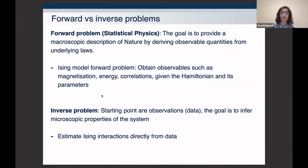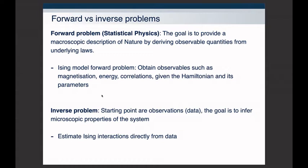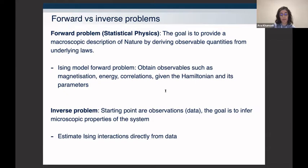In the inverse problem, our starting point is observational data and the goal is to infer microscopic properties of the particular system. In the case of the Ising model, we wish to infer the interactions directly from the data without knowing what type of Hamiltonian the data was generated from.